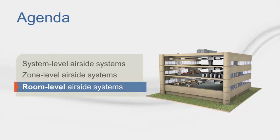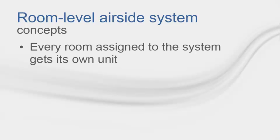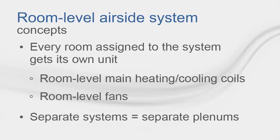Lastly, we get to the room level airside systems. Room level airside systems also have their own basic concepts. All you need to know is every room on the system gets a unit which has its own set of coils and fans, and separate systems have separate plenums. Note that for room level airside systems, if you want two rooms to be covered by the same unit, you will need to create one room that takes both rooms into account.